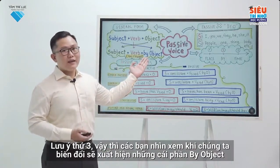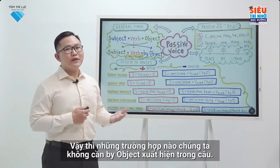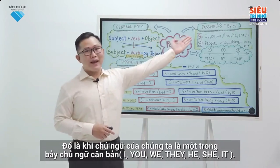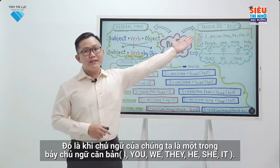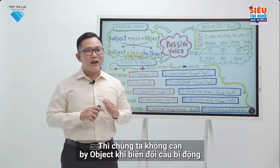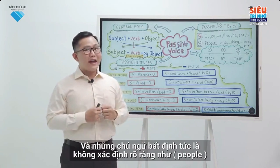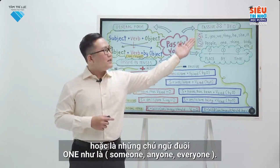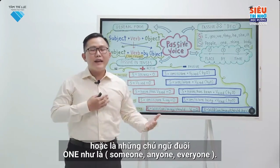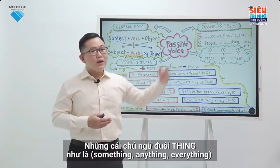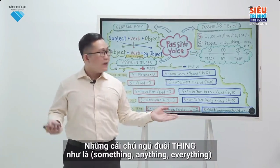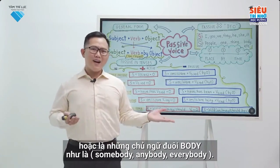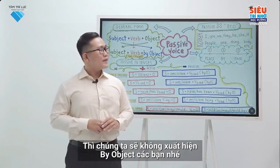The third note: when we transform to passive, the by-object will appear. But there are situations where we don't need to use by-object. That is when the subject is one of the seven basic pronouns — I, you, we, they, he, she, it — or identified pronouns like people, one, someone, anyone, everyone.